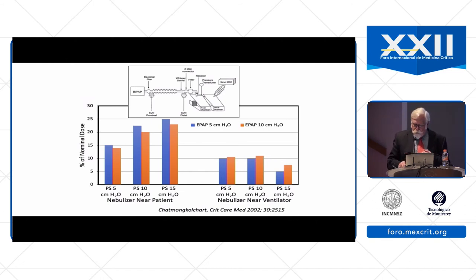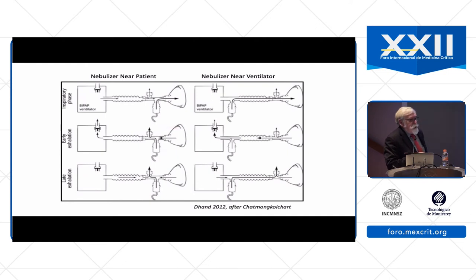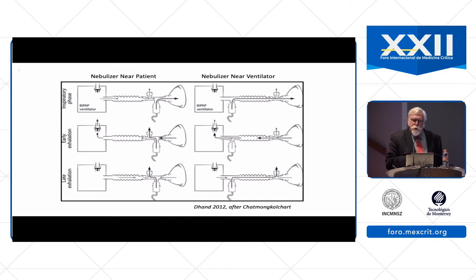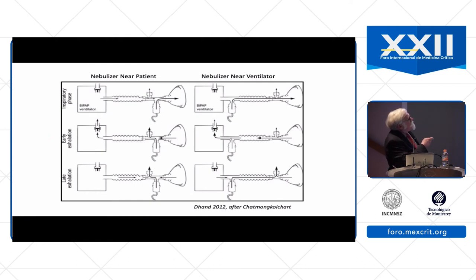Why is that? The reason is primarily because of the leak in the circuit. If we place the nebulizer near the outlet of the ventilator, a lot of the aerosol delivered into the circuit ends up leaking out of the leak port — lost to the room rather than delivered to the patient. So with non-invasive ventilation using a passive circuit, we want to place the nebulizer near the patient rather than near the ventilator.